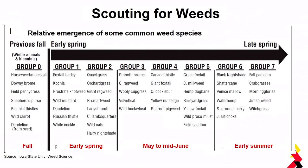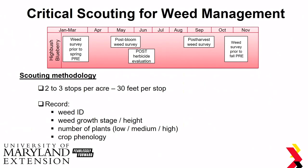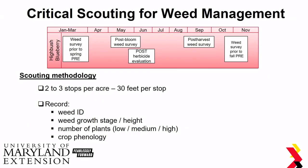A lot of grasses — especially foxtails like green foxtail and barnyard grass — you're going to see emergence really from May to mid-June. When scouting, it's important to scout multiple times during the season: a weed survey prior to pre-application, maybe a post-bloom weed survey, and definitely a survey after your post-emergence herbicide application to see if it worked and to check for resistance issues. Do a post-harvest weed survey to identify what species you might be dealing with next year, and another survey prior to fall pre-emergence.